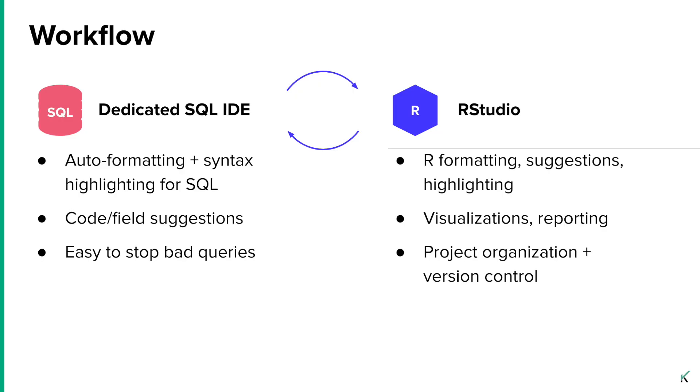On the RStudio side, there are a lot of nice R features — obviously visualizations, reporting, being able to mix languages in the same document as we mentioned earlier. But I think most importantly, you have the ability to organize your analysis project and on top of that have version control. That means you have your SQL files, your data files, your R files, maybe R Markdown files, all together in one space. It's a project that you can easily give to someone else and have everything work. And on top of that, everything is version controlled so you can connect directly to GitHub.